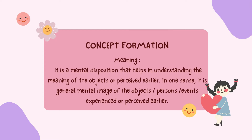Concept formation is a mental disposition that helps in understanding the meaning of objects perceived earlier. In one sense, it is a general mental image of objects, persons, events, or experiences perceived earlier. For example, a child perceives a black cow for the first time and is told that it is a cow. He tries to form an idea about it. In the beginning, the idea is very particular in nature. Later on, when he perceives a white or red cow, he does not at once call it a cow. He makes an inquiry and comes to understand that these are also cows, comparing the particular mental image of the previously perceived cow with the images he is having at present.